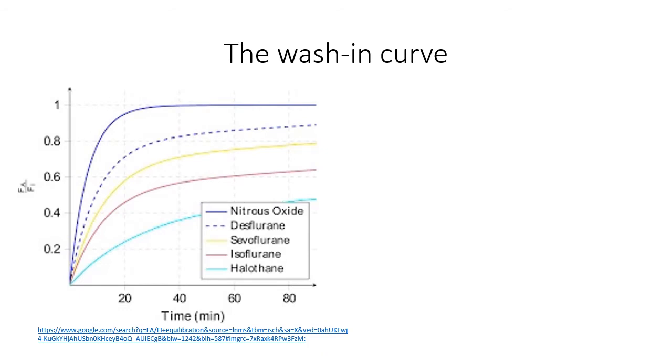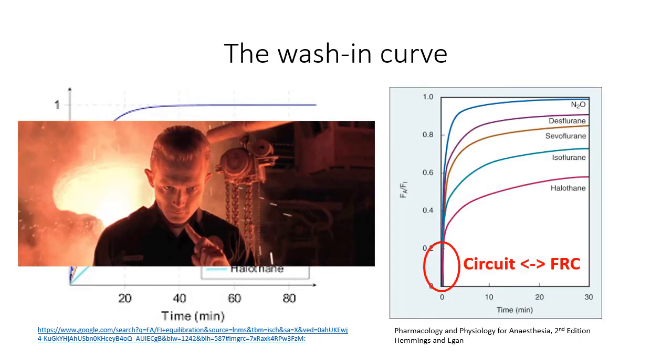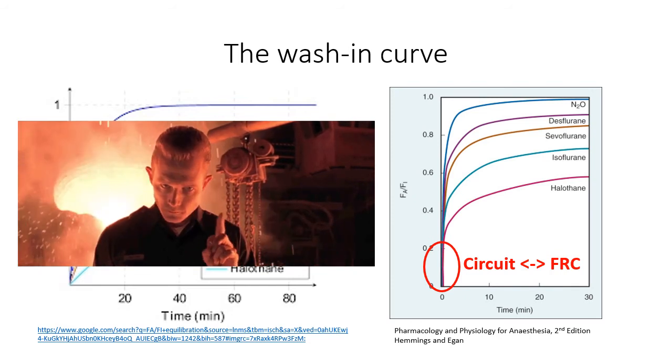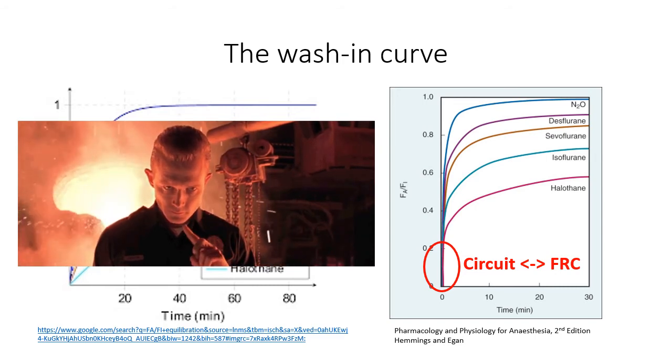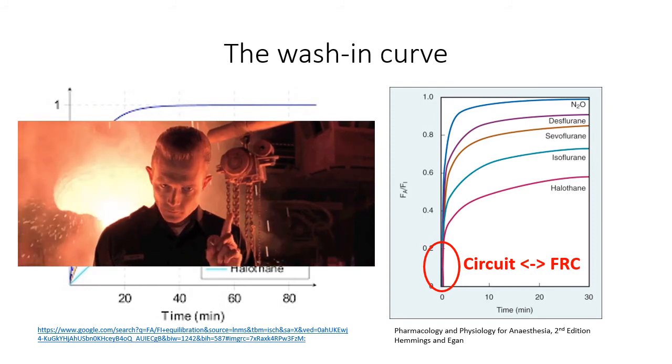Many people will draw the graph like this one on the left hand side, but unfortunately that's not correct. Here on the right you can see the graph from the textbook by Hemmings and Egan. The curves have in common the very first upstroke, because the physicochemical properties of the drug do not at all affect dispersal into the functional residual capacity. It is only after the drug uptake begins that drugs begin to differentiate themselves.